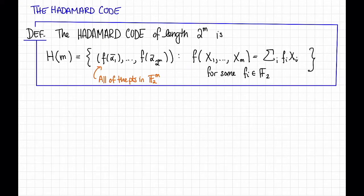Notice that there are 2 to the m such functions f, corresponding to all of the possible different choices of fᵢ. And so the dimension of this code is m.